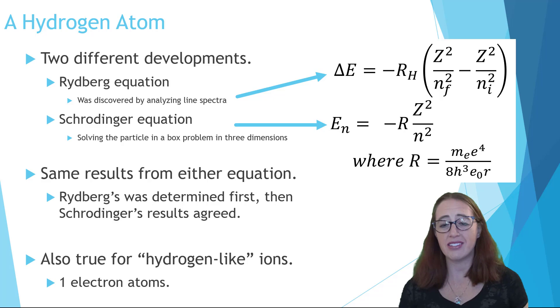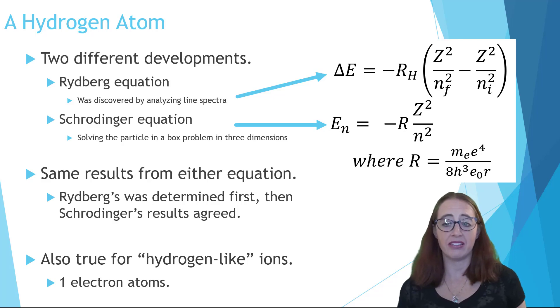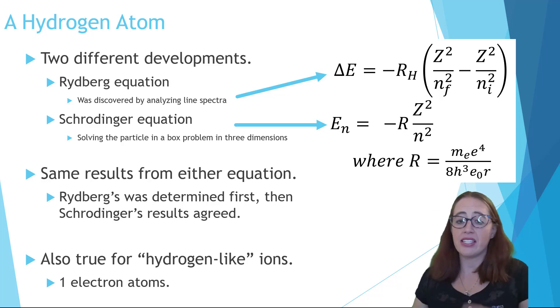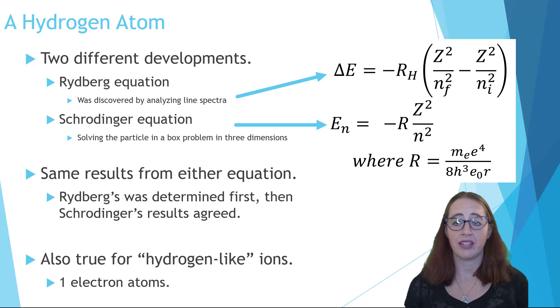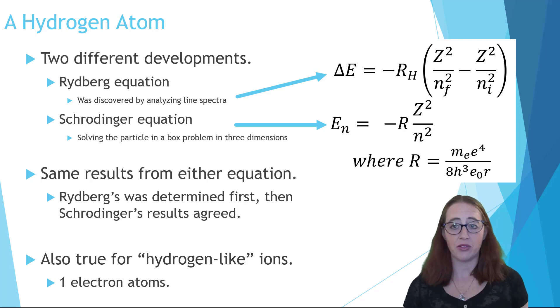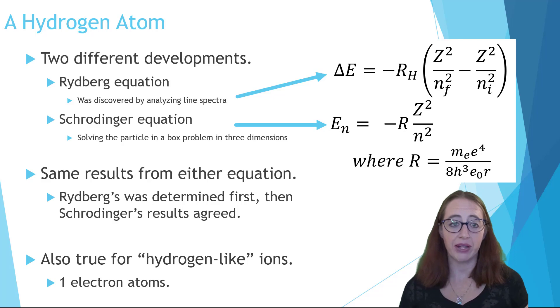Schrödinger's approach is just a bit more detailed, where instead of just a single constant Rh, it now has a series of constants that tells you more detail about where that number comes from.